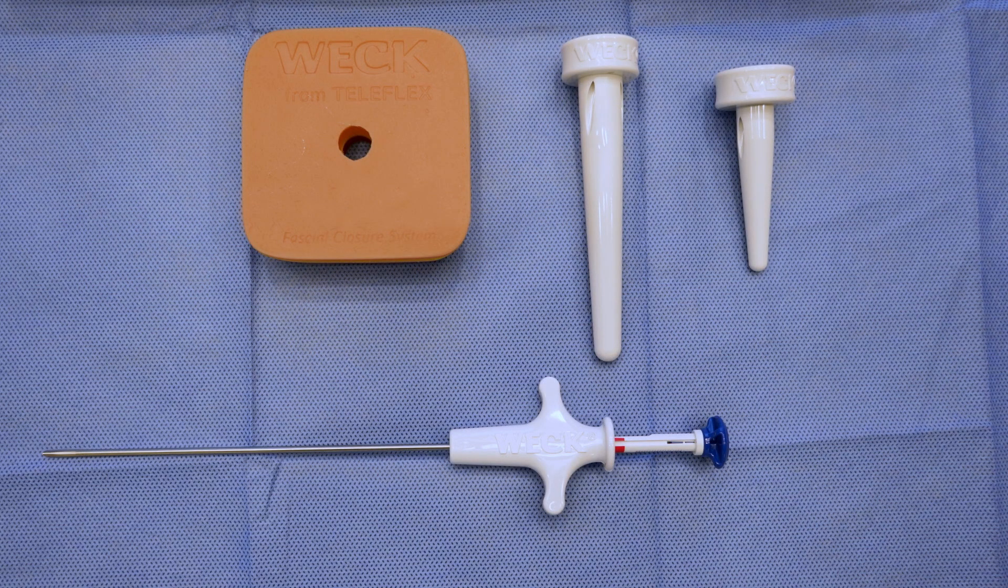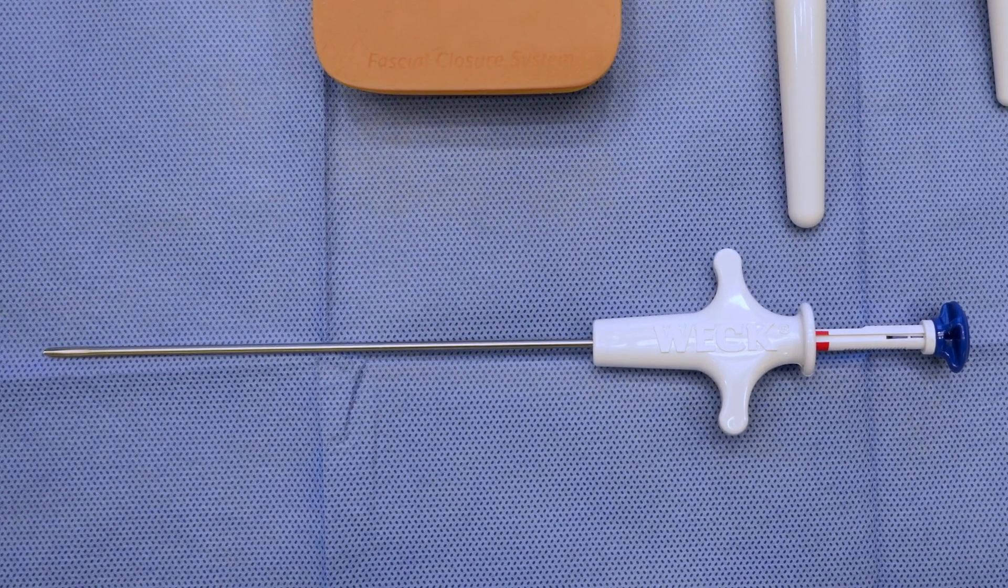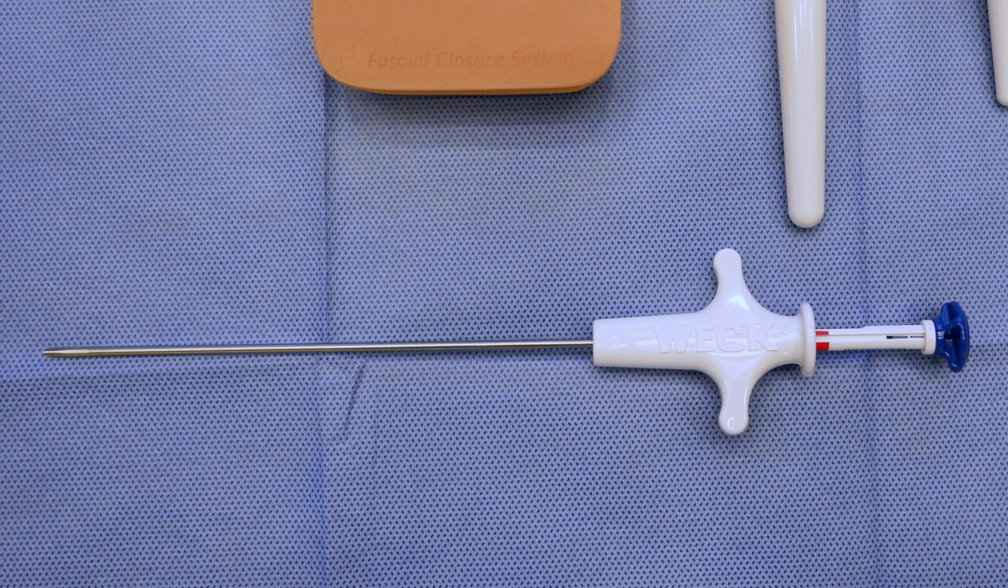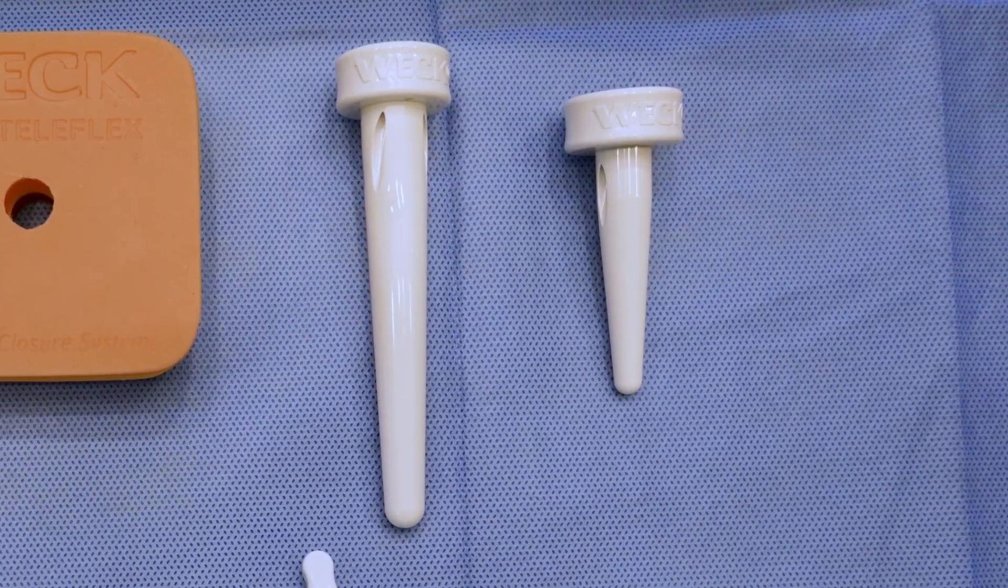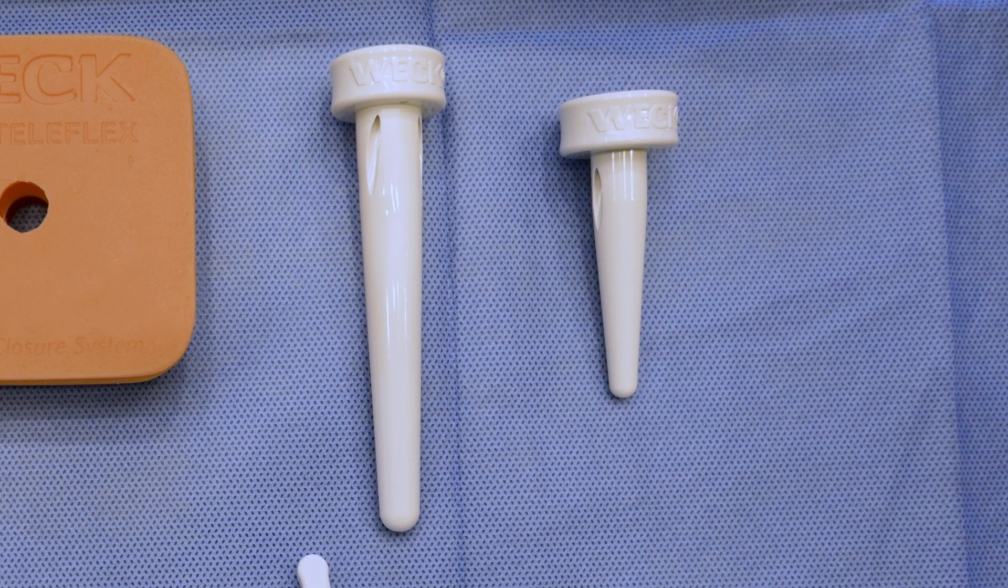The Weck EFX Classic System includes a suture passer with a passer tip that opens his grasper jaws. One end has a button and a red band that will indicate the jaws are closed. The package includes both a 10 millimeter pilot guide channel and a 15 millimeter pilot guide channel.